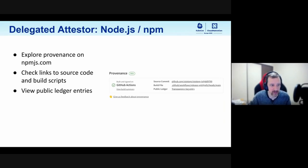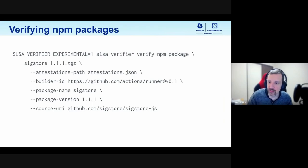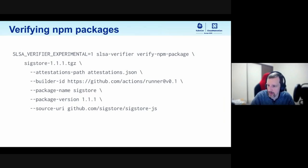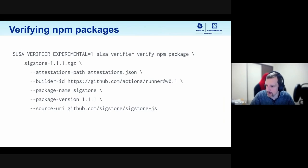You can see provenance on the registry itself if you look at the web page for your package. From there, you can check out things like links to the source code, links to the build script used to generate the package, public ledger entries that describe that this event actually happened, and provide an auditable piece of metadata that you can use during verification. This provides a lot of extra trust in your package when you've developed and published it, as well as providing a way of actually verifying that strongly when you install the package.